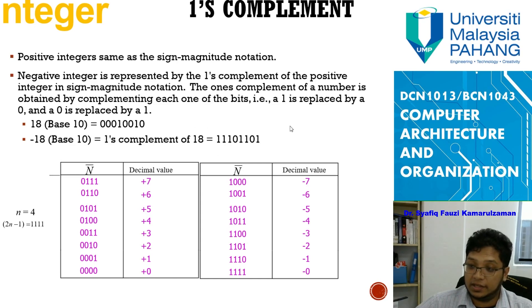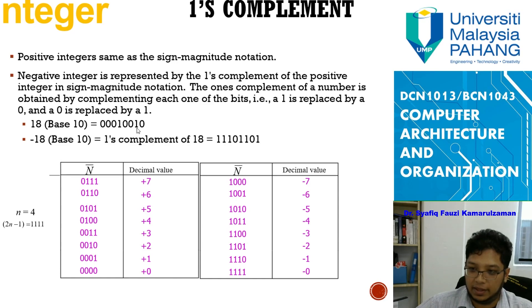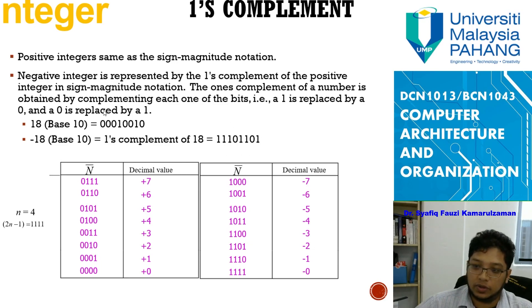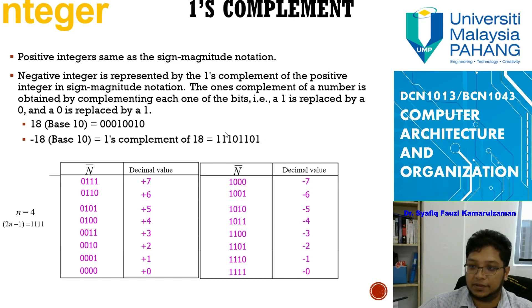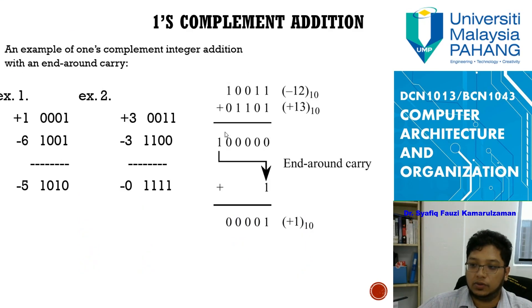To illustrate: for the positive number 18 in decimal, the bits have a certain pattern. For negative 18, the one's complement is the bitwise inverse — every zero becomes one and every one becomes zero. So for one's complement, a negative number is the opposite bit pattern of the corresponding positive number.